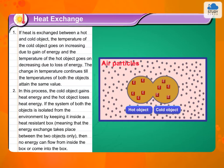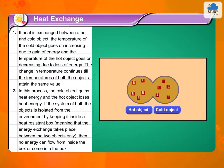In this process, the cold object gains heat energy and the hot object loses heat energy. If the system of both the objects is isolated from the environment by keeping it inside a heat-resistant box, meaning that the energy exchange takes place between the two objects only, then no energy can flow from inside the box or come into the box.